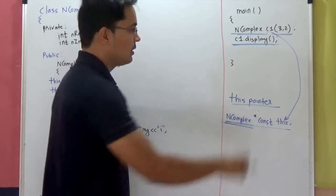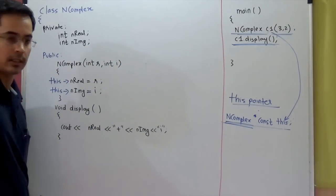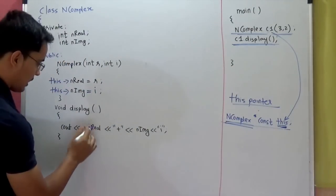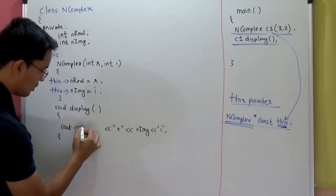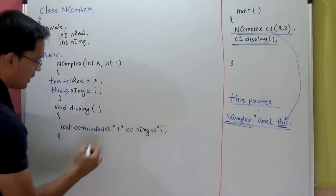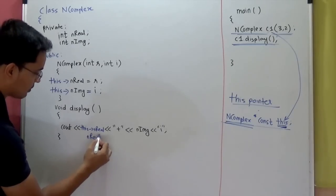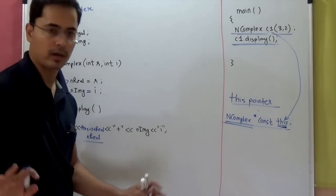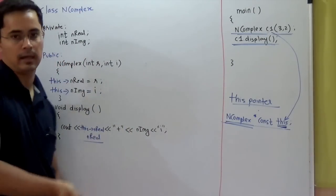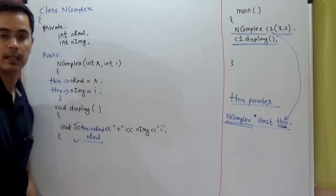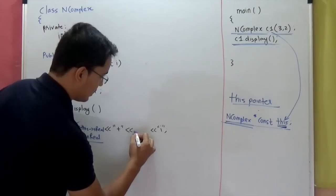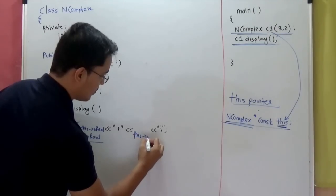The object which is invoking these functions — let's say in the second line C1.Display — C1 is invoking the display member function. So this pointer will store the address of C1. And instead of just nreal, I can say cout << this->nreal. Even if I say just nreal, that is fine and will work. But implicitly, it is happening like this->nreal. Both syntaxes are okay — you can use either. Similarly, instead of nimaginary, it will be this->nimaginary.